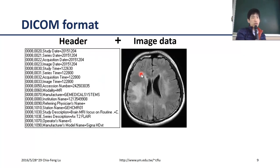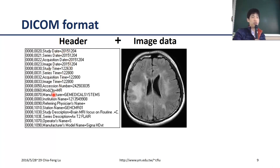DICOM format not only contains the image data itself but also includes essential information about the study date and patient information — in over 200 or 300 different fields recording different information within the file. This part we call the header section, followed by the image data.